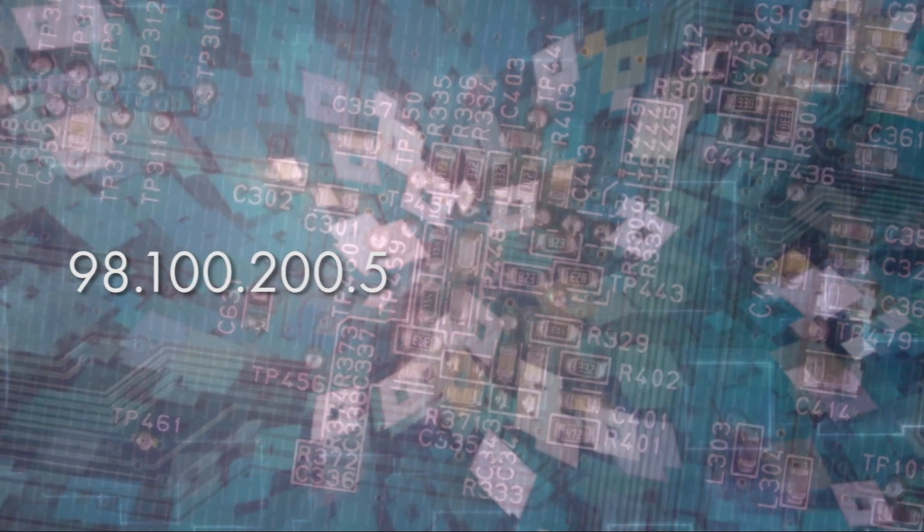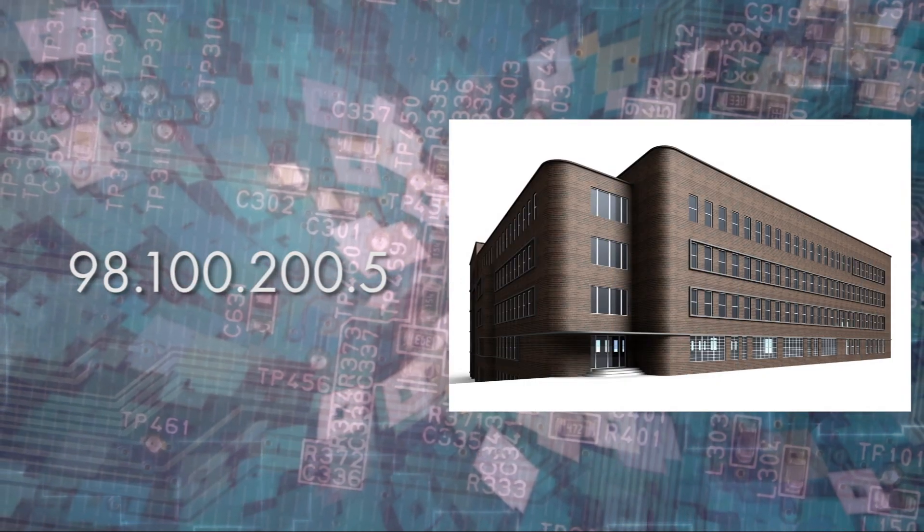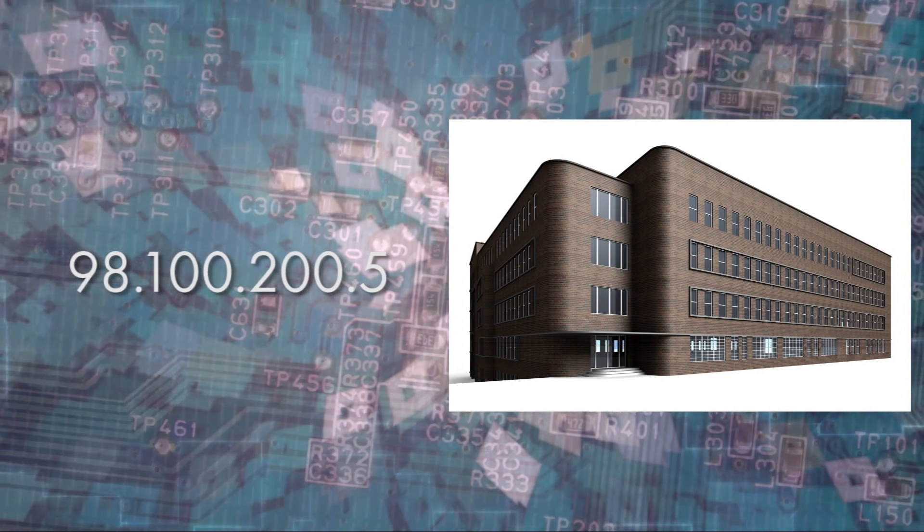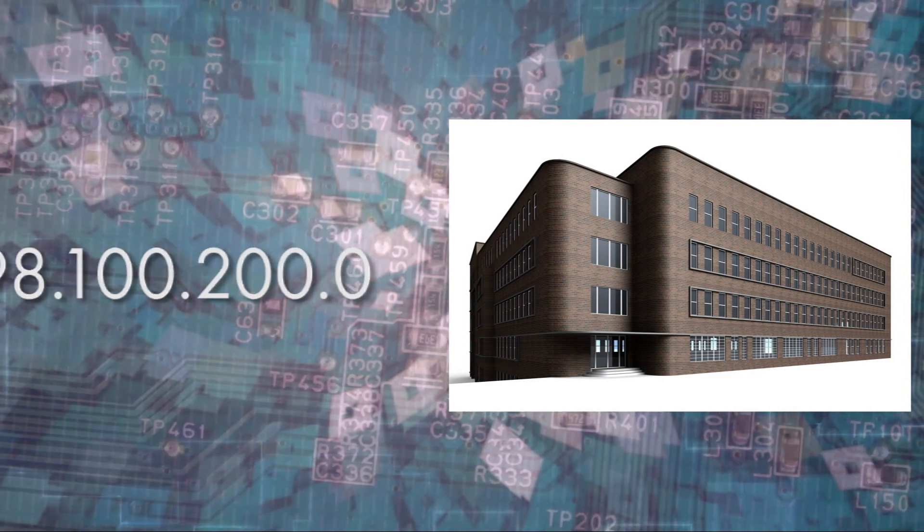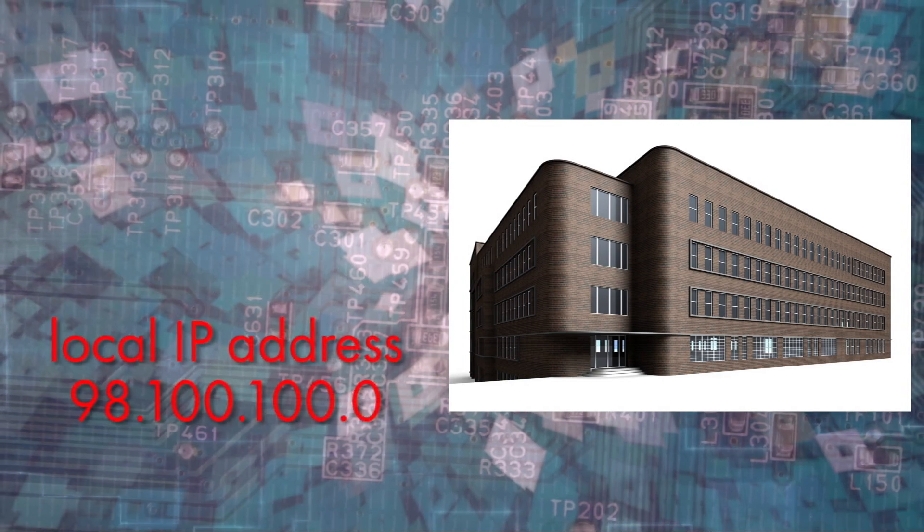What if I want to send a packet to 98.100.200.5, which is in another office, but still on the local network? When I run that through the subnet mask, I get 98.100.200.0, which is not the same, so I need to send the packet to my gateway.